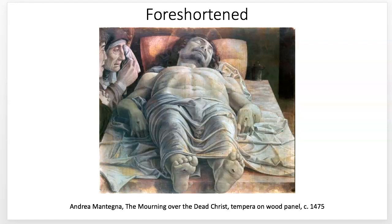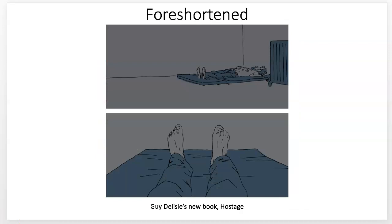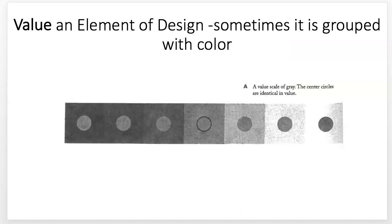Foreshortening is part of perspective — it's the distortion of objects poking out toward the picture plane to make them appear to be coming toward you. The feet, hands, and other things get bigger than they should be or are distorted, while other spaces get compressed. That's how foreshortening works.